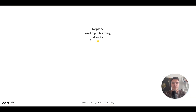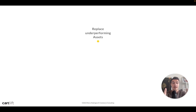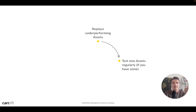First, replace underperforming assets. You sometimes get asset ratings — good, best, or poor — though not every account shows this. If you have those ratings, regularly replace underperforming assets or refresh them. Then, test new assets regularly. If you have more images or videos, great — if not, I highly recommend investing in a set of assets you can use not only for PMAX but also for social media and your store.